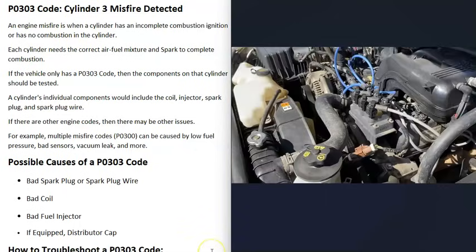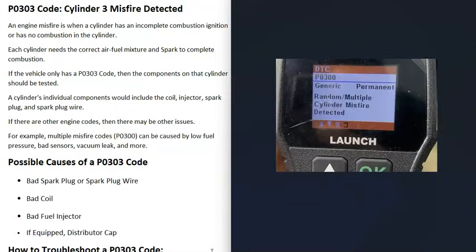One thing to note about these misfire codes: if you're only getting this P0303 code, then that's only going to point to the components on the number three cylinder. But if you're getting multiple misfires — for example, a P0300 code and multiple other cylinder misfires like a P0301 — then that's going to point to something that would affect the whole engine.